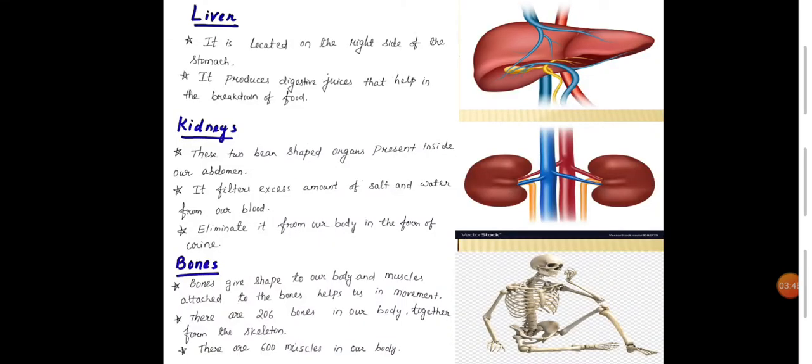Liver is located on the right side of the stomach. It produces digestive juice that helps in the breakdown of food or in digestion of food. Kidneys: These two bean-shaped organs present inside our abdomen. It filters excess amount of salt and water from our blood and eliminates it from our body in the form of urine.